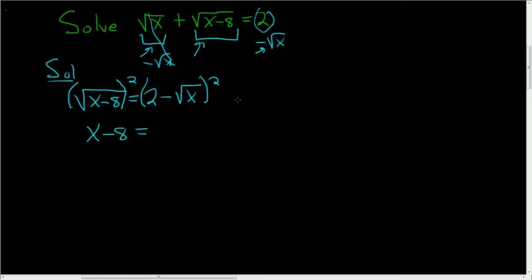Now here you can write this as 2 minus square root of x, 2 minus the square root of x, and multiply everything out. But there's a faster way.